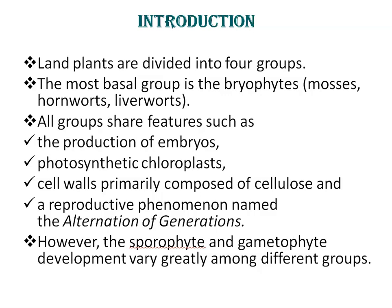Gymnosperms and angiosperms both produce seeds. All these groups share features like production of embryos, the photosynthetic chloroplasts, cell walls primarily composed of cellulose, and reproductive phenomena named the alternation of generation.